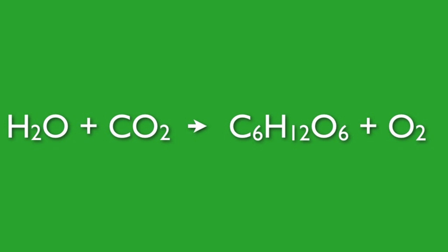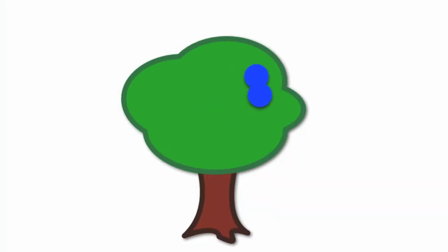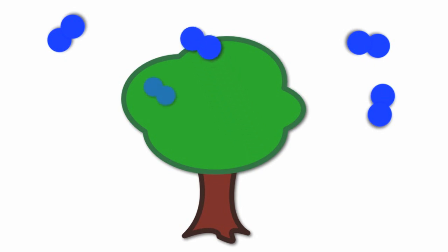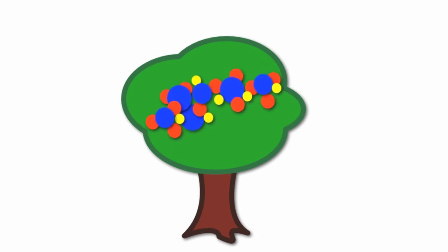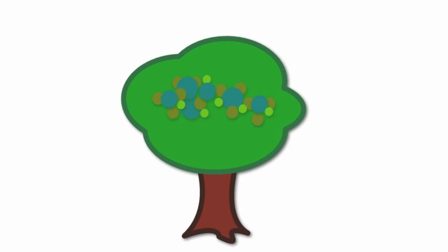Water plus carbon dioxide is used to make glucose and oxygen. These materials then leave the plant — oxygen leaves the leaves through tiny openings called stomata, going into the atmosphere so animals like you and I can breathe in. The glucose doesn't leave the plant; it stays inside the leaves and the plant uses the glucose molecules as energy.